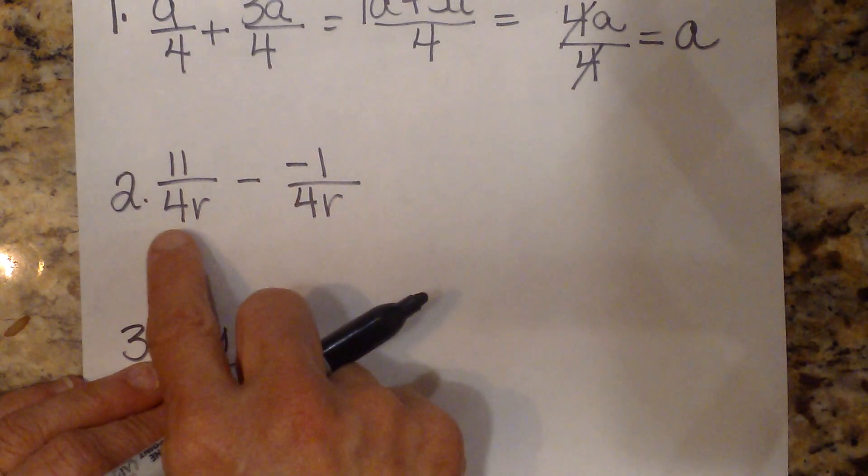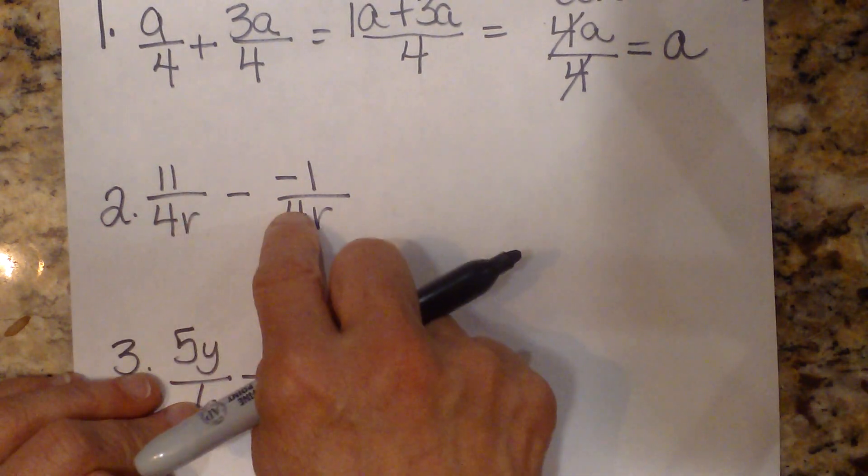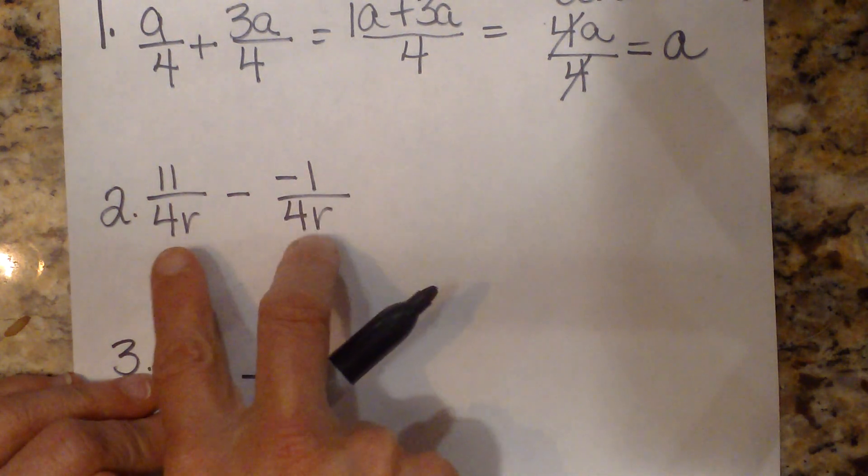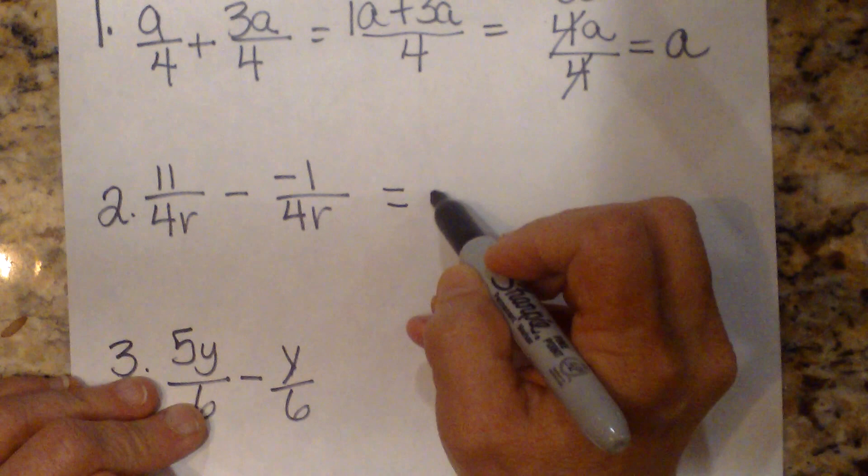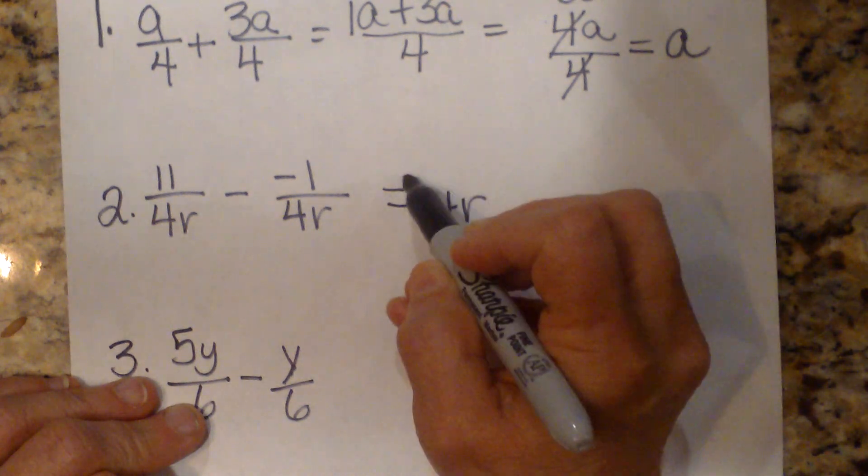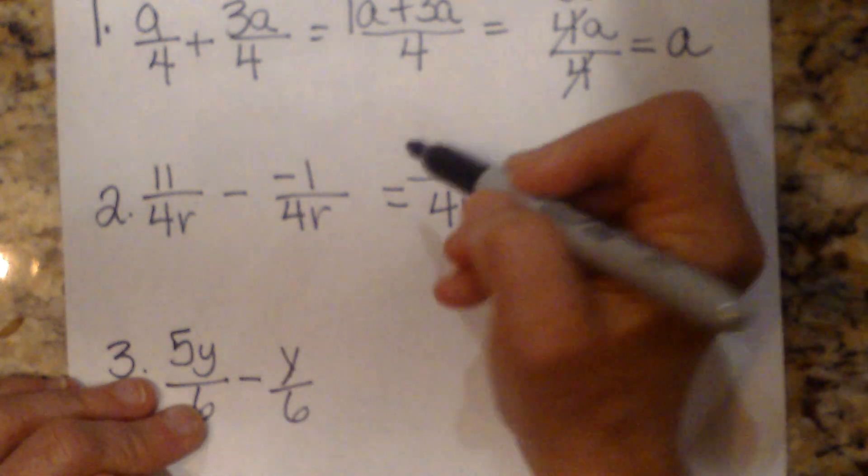Okay, so let's look at this next one. We have 11 over 4r minus a negative 1 over 4r. Again, we have common denominator. So we're just going to bring that common denominator over, and then we're going to subtract the numerator or the top.